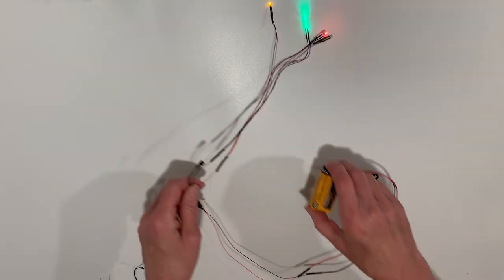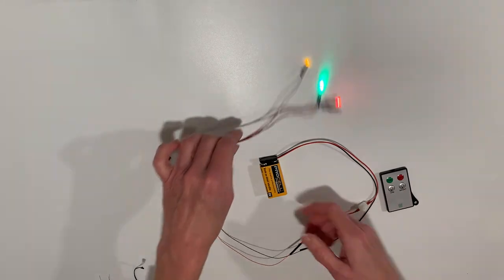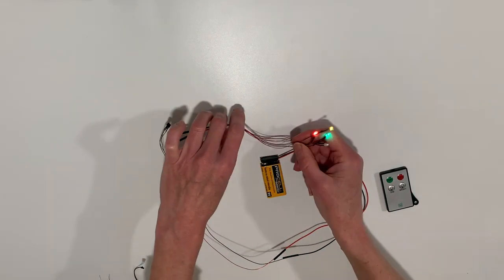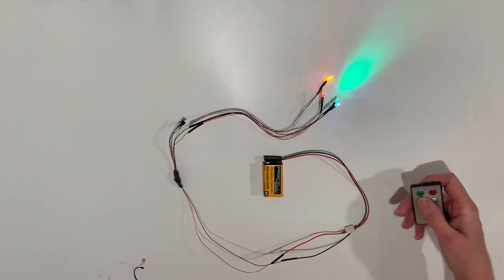In this case, I've attached the remote to a 9-volt battery and you can see I have a variety of lights that I can turn on and off with the remote.